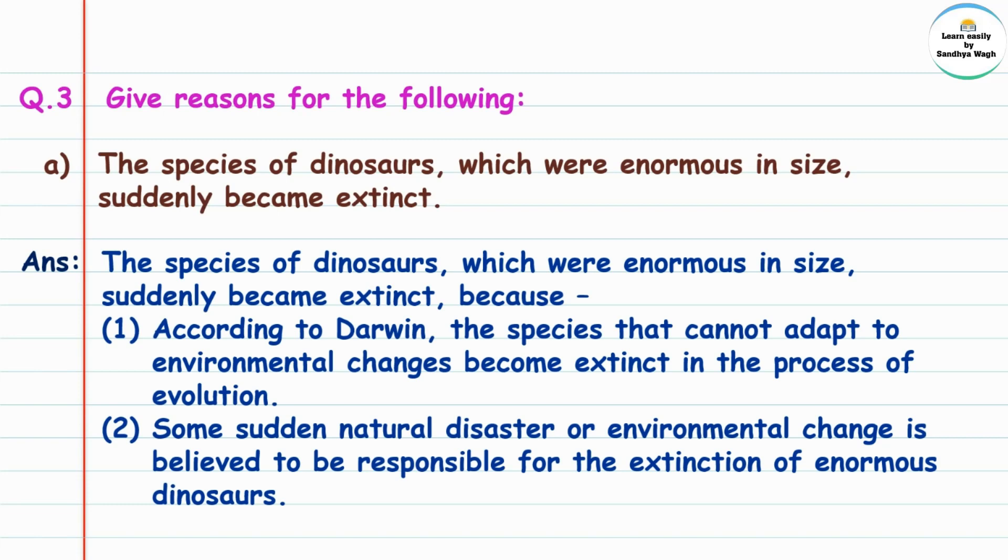Answer: The species of dinosaurs which were enormous in size suddenly became extinct because, according to Darwin, the species that cannot adapt to environmental changes become extinct in the process of evolution.